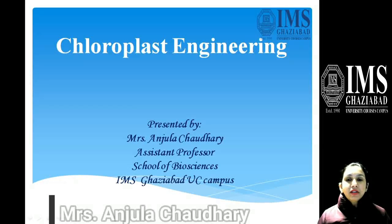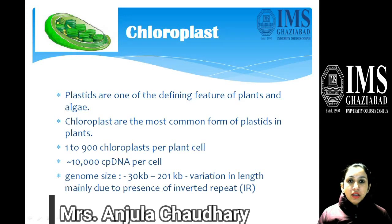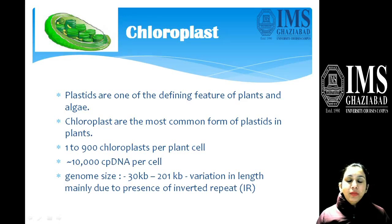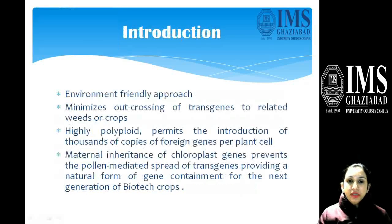Hello students, today we will discuss chloroplast engineering, which is another important technique of biotechnology. First of all, chloroplast is a form of plastid which is green in color, and about 1 to 100 chloroplasts are present per plant cell. Approximately 10,000 DNA copies are present in the cell, the genome size is 30 to 201 kb, and the variation is due to the presence of inverted repeats.